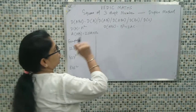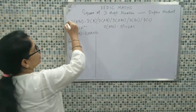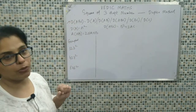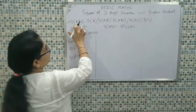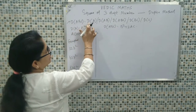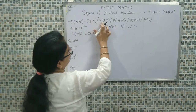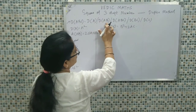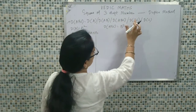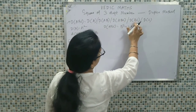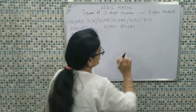When we talk about the Duplex method, the calculation is based upon a simple formulation. The duplex of ABC equals: duplex of A, then duplex of AB, then duplex of ABC, then duplex of BC, and finally duplex of C.